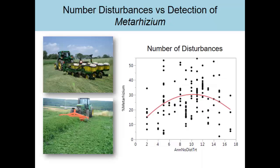In organic systems there are lots of disturbances — planting, harvest, cultivation. We're working to reduce tillage by using rolled cover crops. We find a loose curved relationship between number of disturbances and fungal abundance: at zero disturbances we find less, at maximum disturbances we find less, and there's a happy medium in between. For us that was between 8 and 10 disturbances per year — full year, not just growing season — including harvesting, rolling, soil management, and weed cultivation. So this particular fungus kind of likes a little bit of disturbance, though not every fungus does.